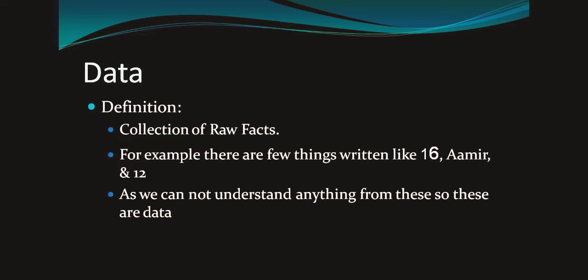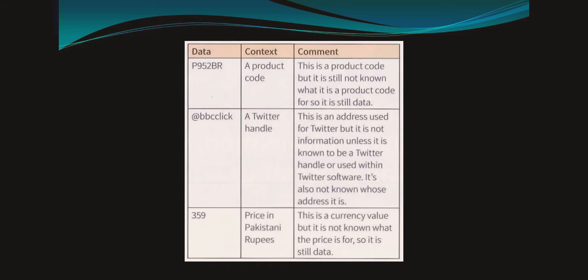Data. We can define data as a collection of raw facts. Or we can say that these are actual things — facts not arranged in a way so that a decision can be made on them. For example, there are a few things written like 16, Amir and 12. As we cannot understand anything from these, so these are data.